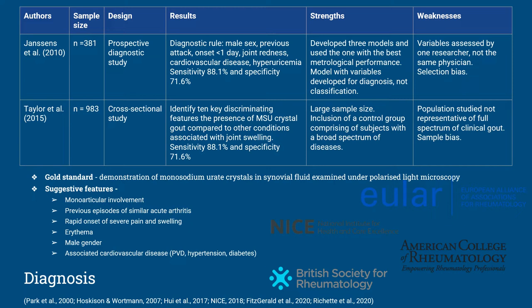In the second study, Taylor and colleagues found ten features highly associated with the presence of monosodium urate crystal gout, six of which include those already outlined. The strengths of the study are the large sample size and inclusion of a control group. Its main limitations arise from the population studied — subjects were not a primary care population and likely had more severe disease, not representing the full spectrum of clinical gout. The sample was also biased towards chronic disease by the inclusion of patients with persistent features. Nevertheless, the findings of both studies are applicable and demonstrate that the clinical and laboratory features are sensitive and specific enough to rely on for the diagnosis of gout in David's case, without the need for advanced diagnostic tests.